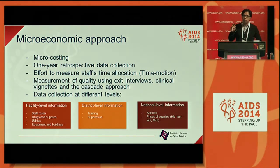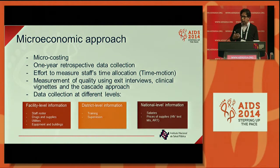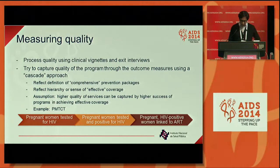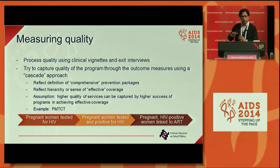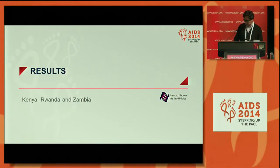Two important things to mention: we made an important effort to capture, using an observational method, the allocation of time of different staff to the services we are interested in. Second, we also captured quality, using different methods and approaches to capture process quality, and this idea of the cascade of services. For each prevention intervention we captured not only a single output but different outputs along what we define as the cascade of services.